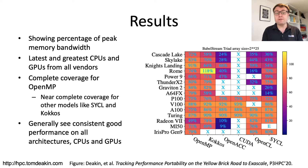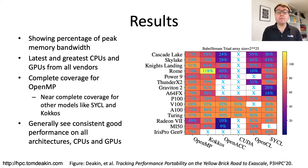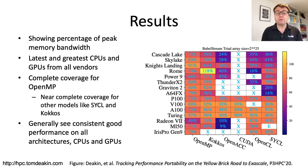From AMD I have the Radeon 7 and MI50 GPUs, and from Intel the Iris Pro Gen 9 integrated GPU — relevant as Aurora will use Intel GPUs at Exascale. On the x-axis are six programming models including OpenMP. OpenMP provides complete coverage: it's the only model for which we were able to generate results across all processors.